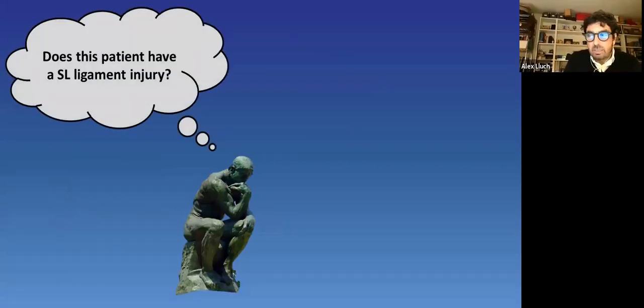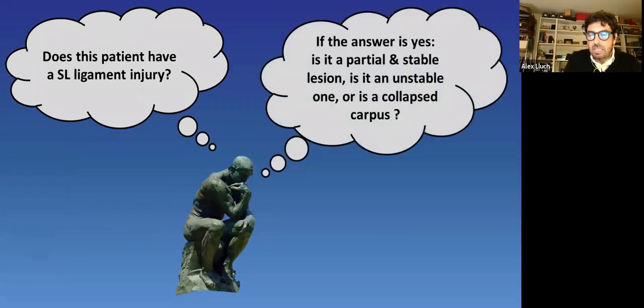For me, diagnosis starts with two questions. The first one, does this patient have a scapholunate ligament injury? And the second one, if the answer is yes, is it a partial stable lesion? Is it an unstable one? Or is it a collapsed carpus? Which tools do we have to differentiate these situations prior to make a treatment plan?